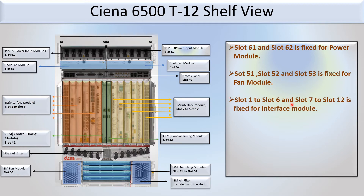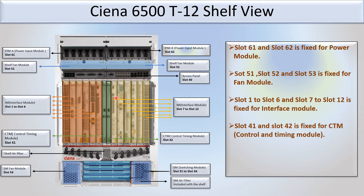Slot 1 to slot 6 and slot 7 to slot 12 — these 12 slots are fixed for the interface module. Slot 41 and slot 42, as you can see in the picture, are fixed for the CTM, that is the Control Timing Module.